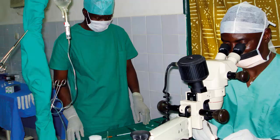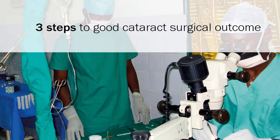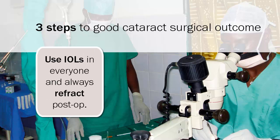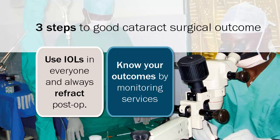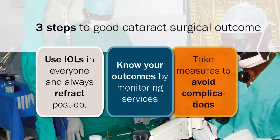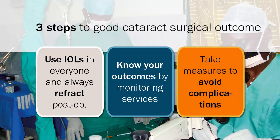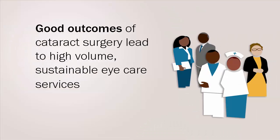In conclusion, for good cataract surgical outcome there are three clear steps to follow. One: use IOLs in everyone and always refract postoperatively. Two: know your outcomes by monitoring service provision using a manual tally sheet or computer software. And three: take practical measures to avoid complications. Good outcomes of cataract surgery lead to high volume, sustainable eye care services.